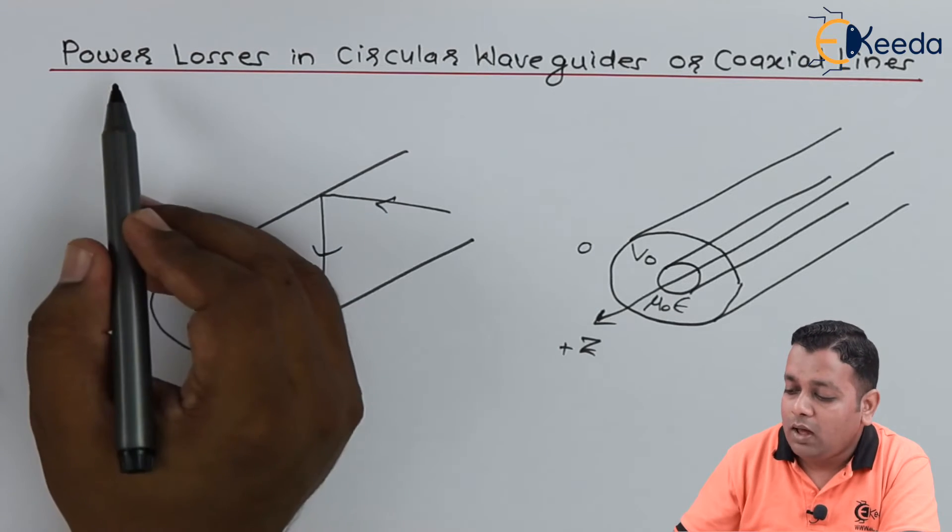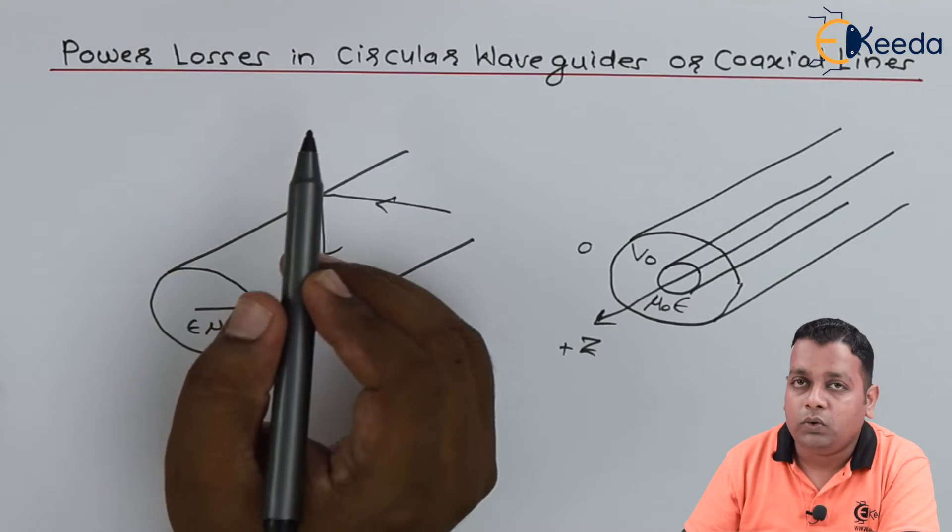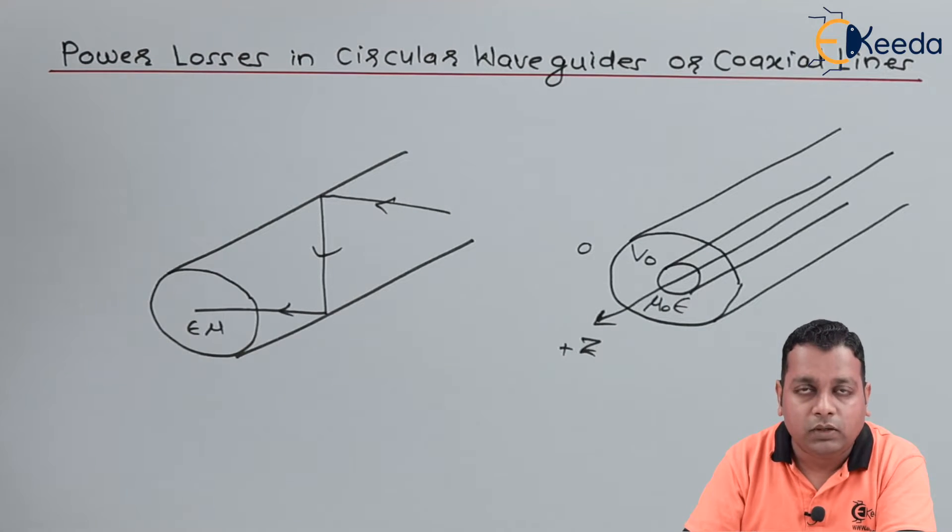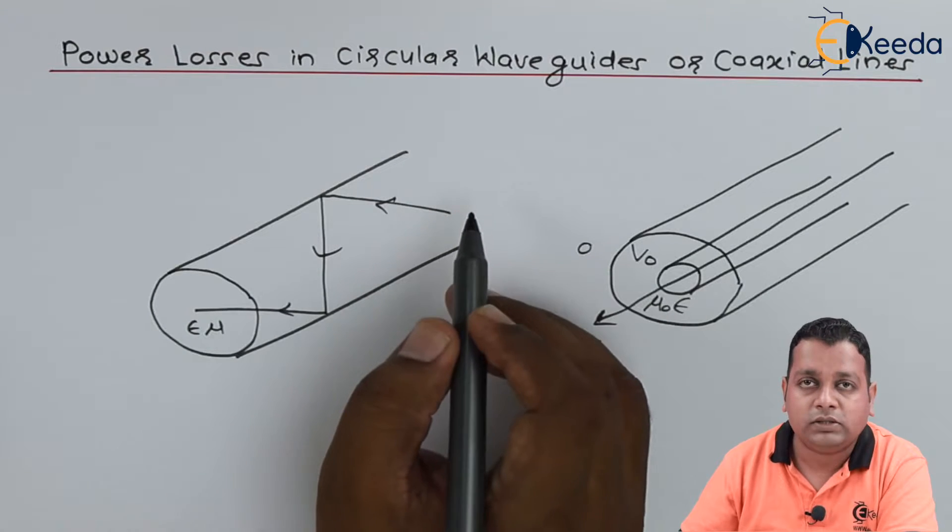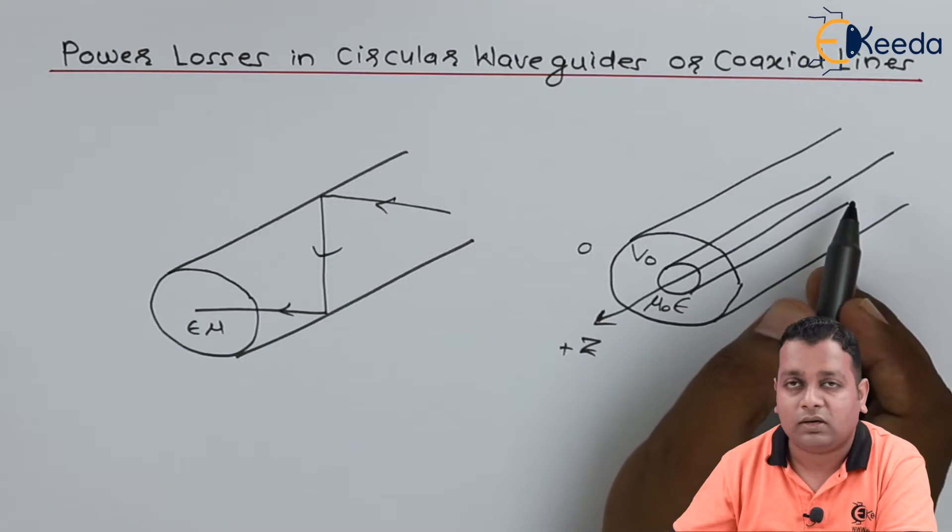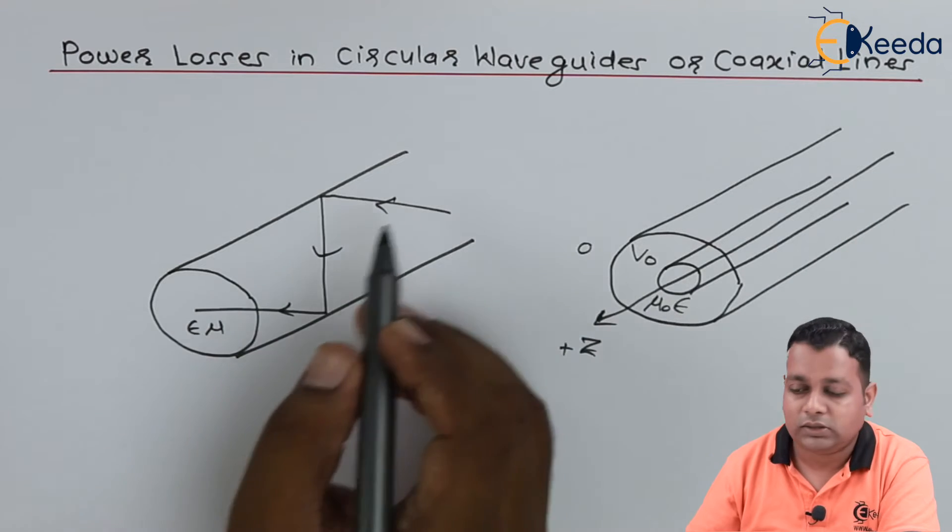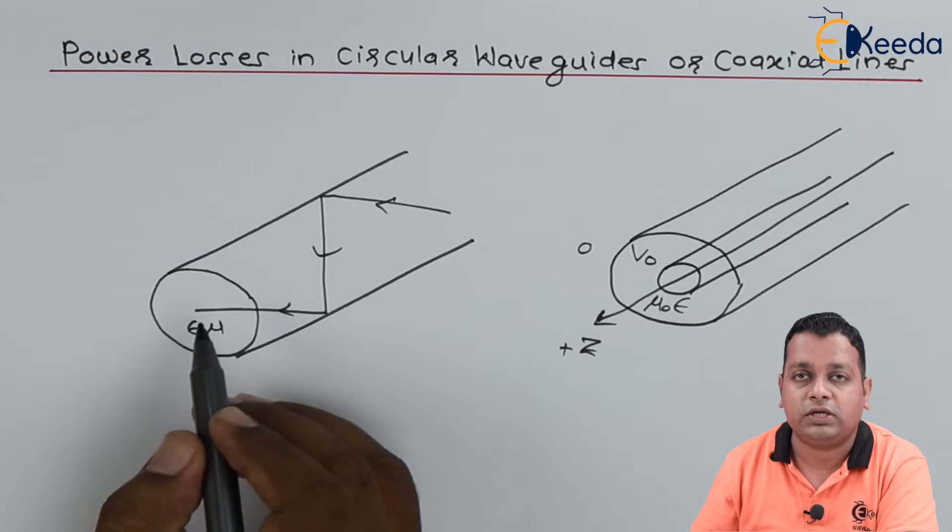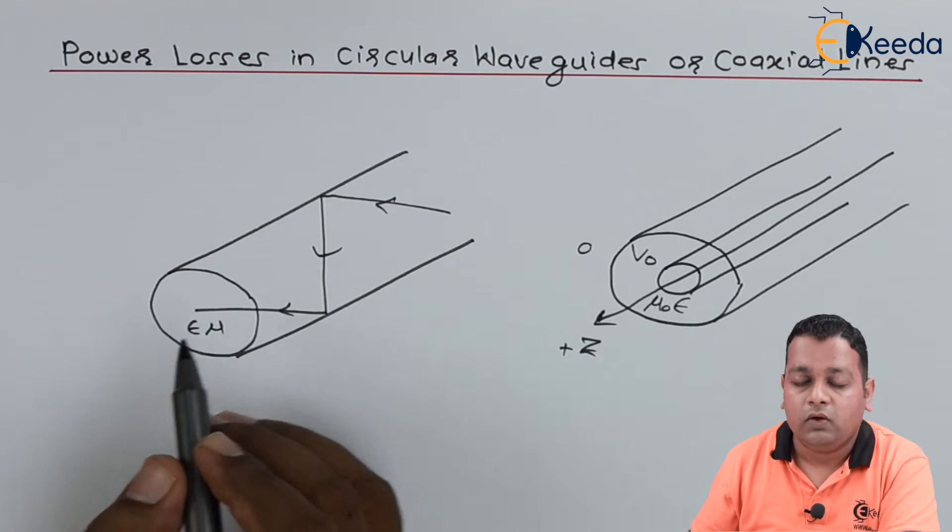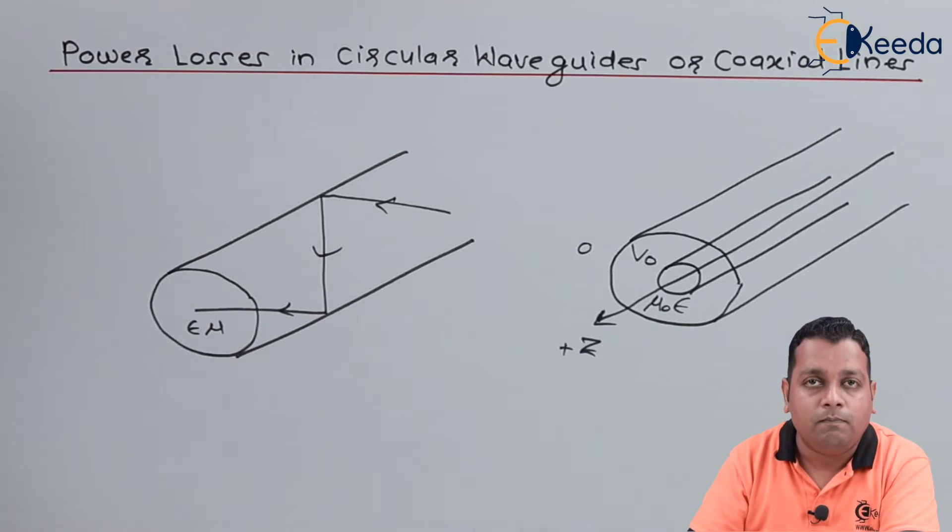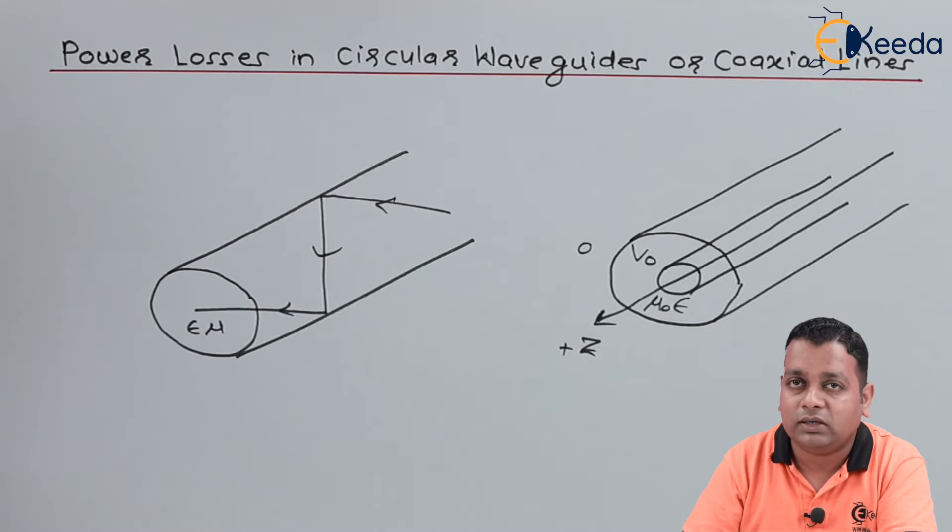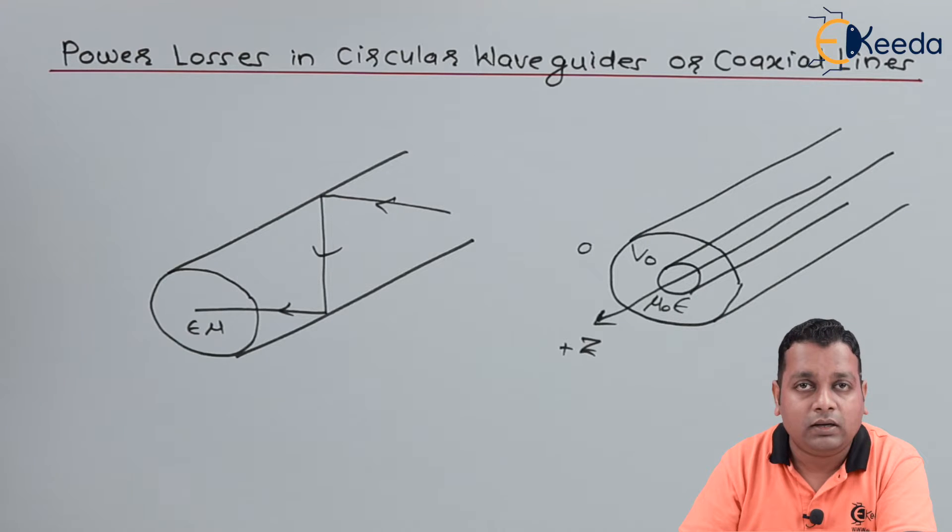Now what are the reasons to have power losses? We don't want any of the power content that has been input from one end of the circular waveguide or coaxial transmission line to be lost in between the journey. 100% should reach the end. We consider the metallic walls that have been making the circular or coaxial transmission line to be 100% perfect conductor, but practically there are some limitations.